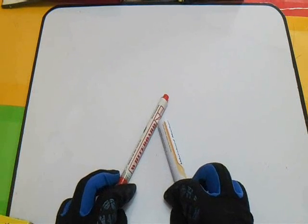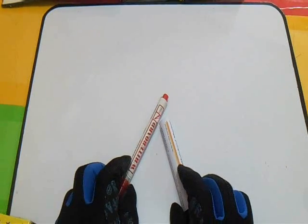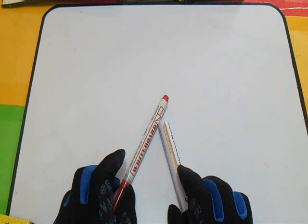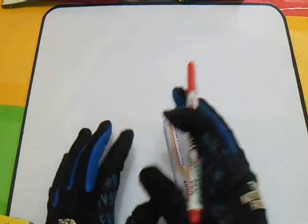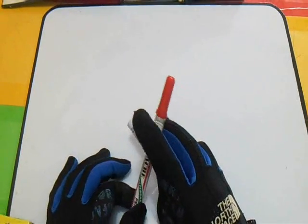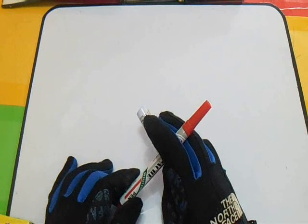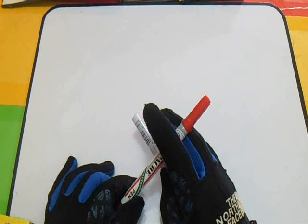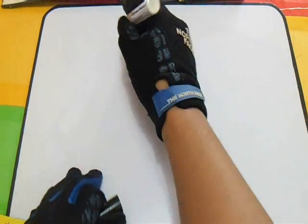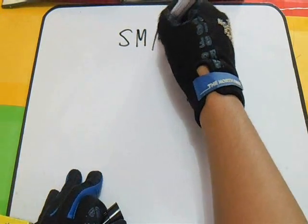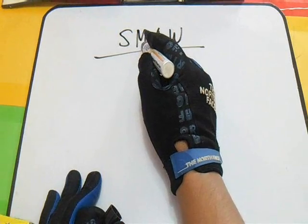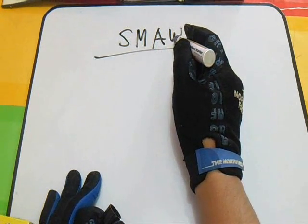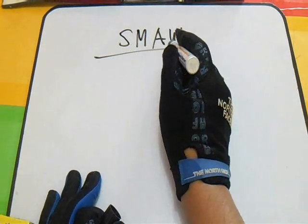Hi, welcome and thanks for watching and subscribing. Our topic for today is welding process — specifically the SMAW electrode identification system. SMAW stands for Shielded Metal Arc Welding.